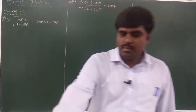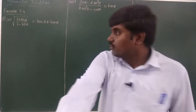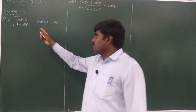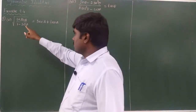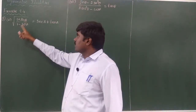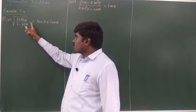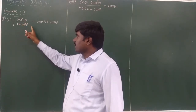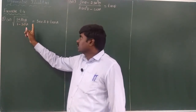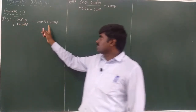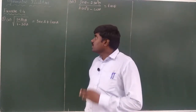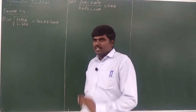This is question number 5. The question is: the square root of (1 + sinA) divided by (1 - sinA) is equal to secA plus tanA. You need to prove that it equals secA plus tanA.